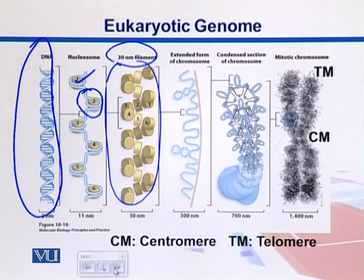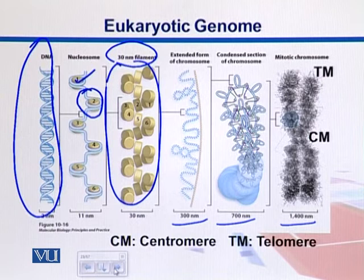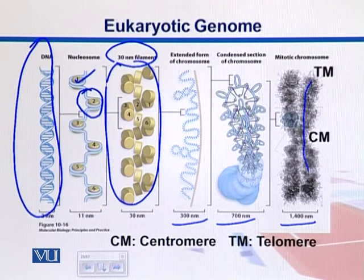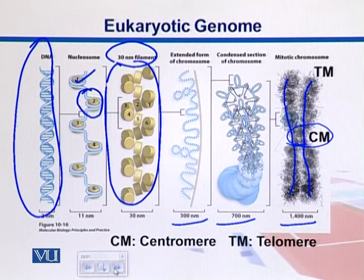These structures then super-coil on themselves to make further larger fibers, until they reach the chromosome width of 1400 nanometers. Looking at the chromosome, we can recognize different arms called sister chromatids — remember, this is just one chromosome but it has two chromatids. Somewhere in the middle there is a constricted part called the centromere, whereas the terminal ends are called telomeres.